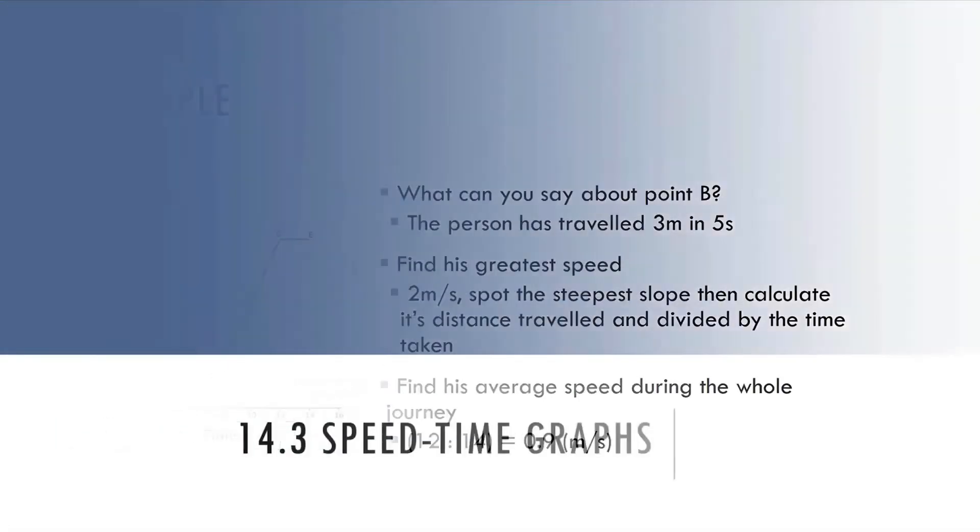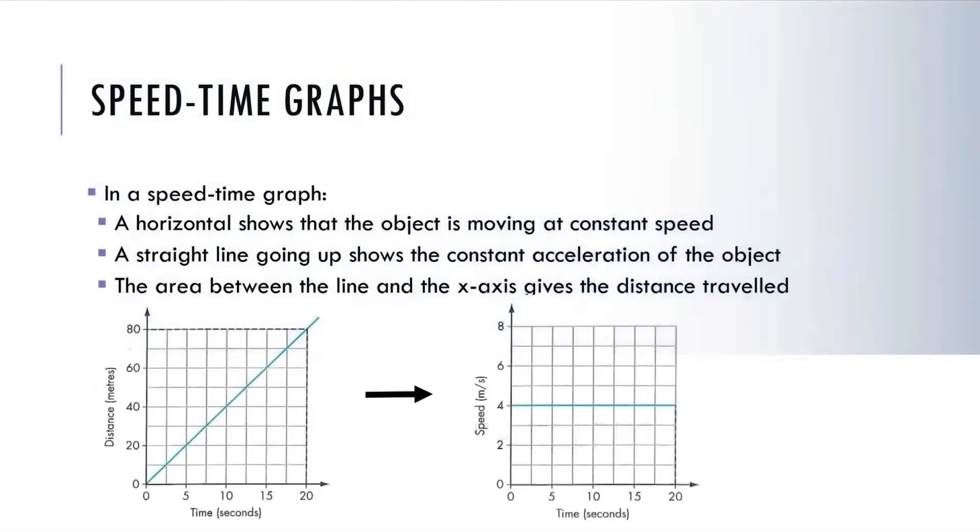Rather than Distance Time Graph, you also have Speed Time Graphs. In a Speed Time Graph, a horizontal line shows that the object is moving at a constant speed. A straight line going up shows the constant acceleration of the object, and if it goes down, it's the constant deceleration of the object. The area between the line and the x-axis gives the distance traveled. Below is a picture of a Distance Time Graph being converted to a Speed Time Graph. From a straight line going up, it turns into a horizontal line, showing that the object is moving at a constant speed.